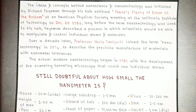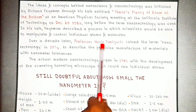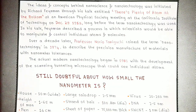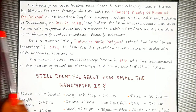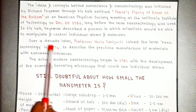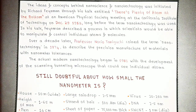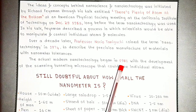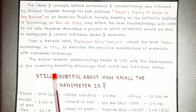Over a decade later, Professor Nario Taniguchi coined the term nanotechnology in 1974 to describe the precision manufacture of materials with nanometer tolerances. The actual modern nanotechnology began in 1981 with the development of the scanning tunneling microscope, which could see individual atoms.